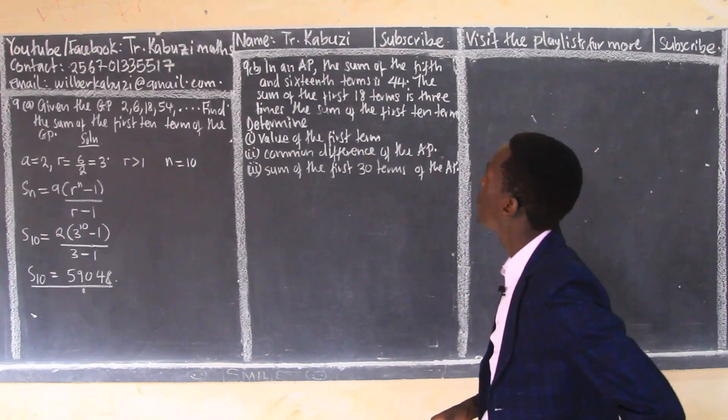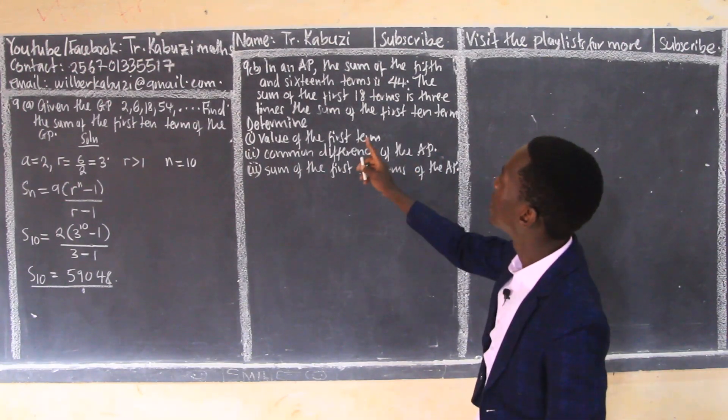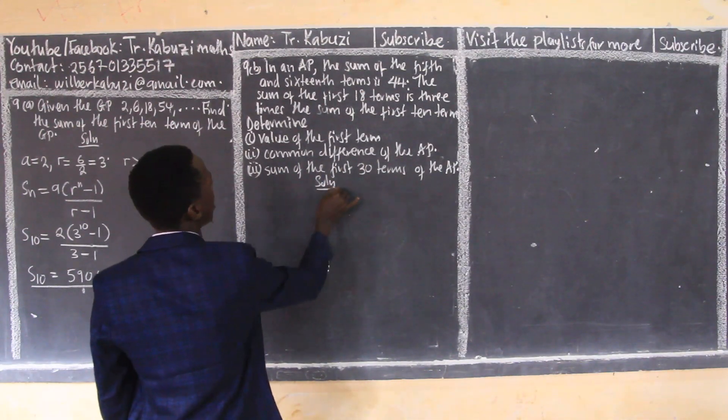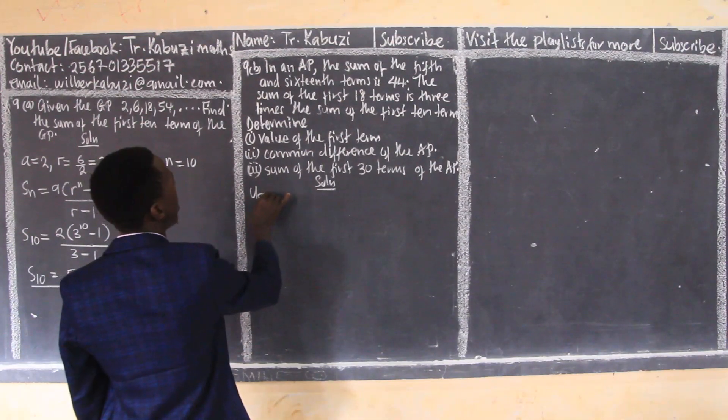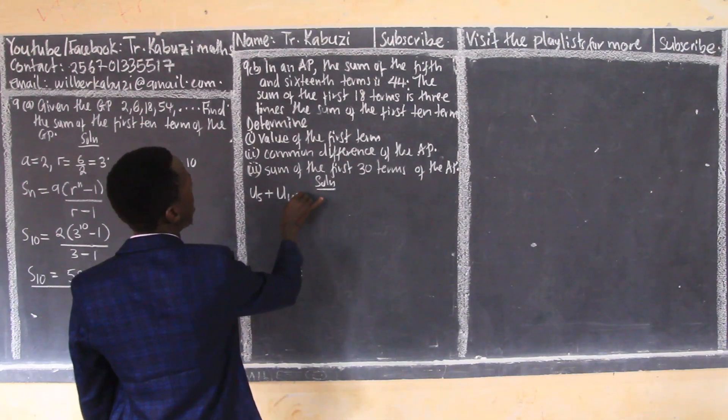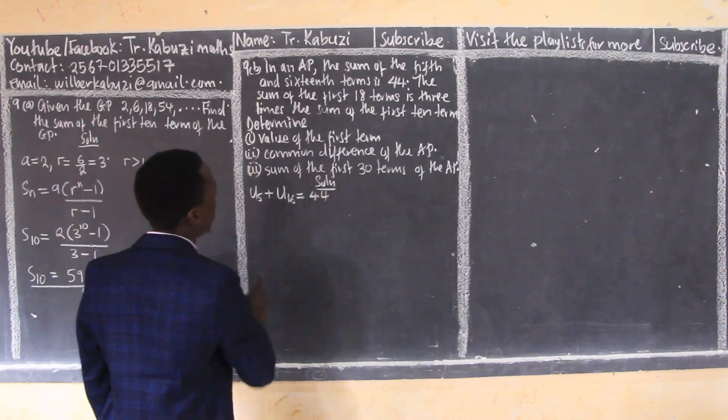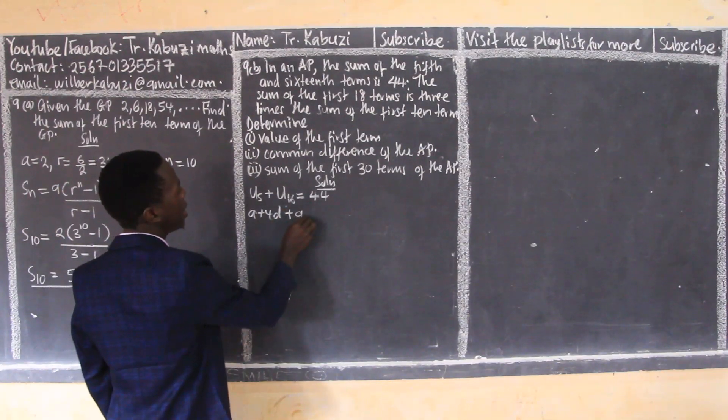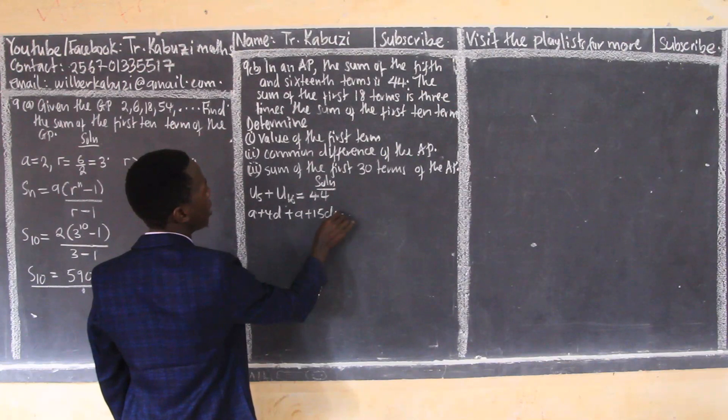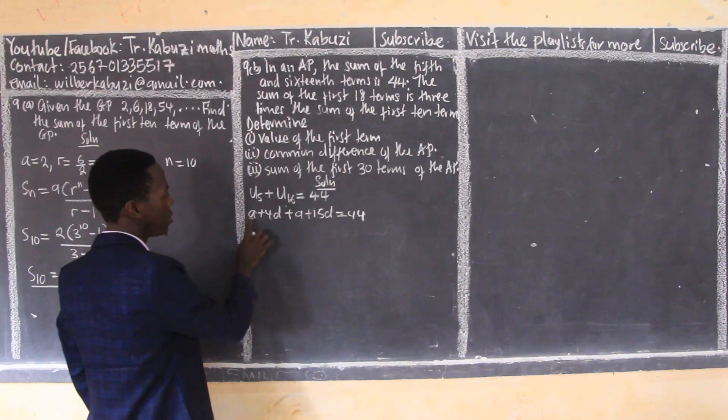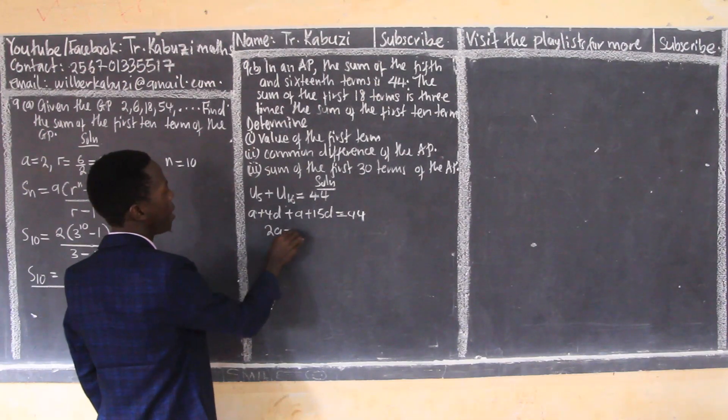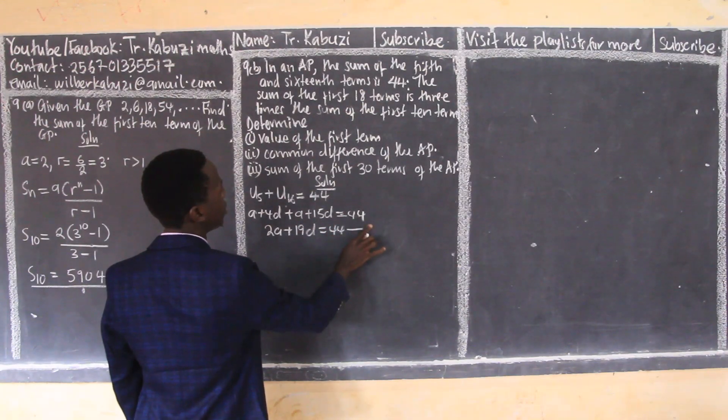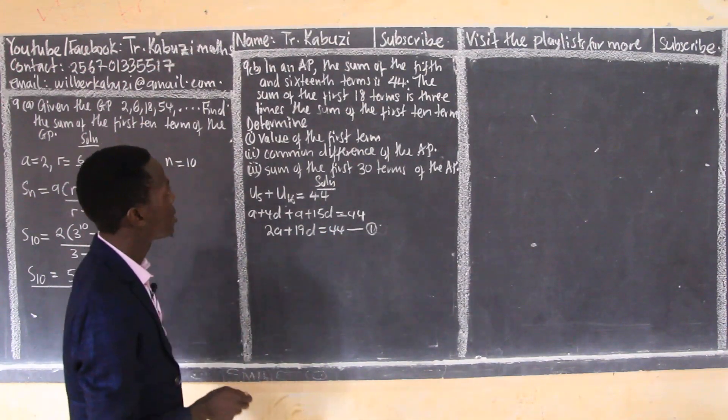Then this one is saying: in an AP, the sum of the fifth and the sixteenth term is 44. So now here they are telling us that the sum of the fifth term and the sixteenth term is 44. You know that in an AP, this one is a plus 4d, and this one is going to be a plus 15d, but they are all giving us 44. So I can see that 2a plus 19d equals 44, and this is equation one.